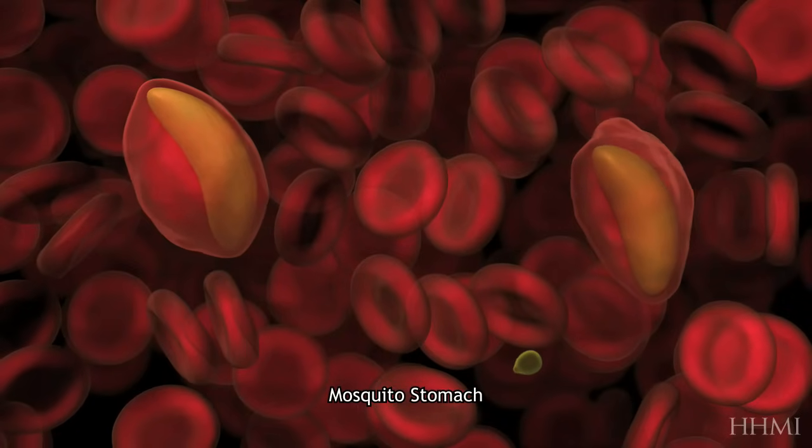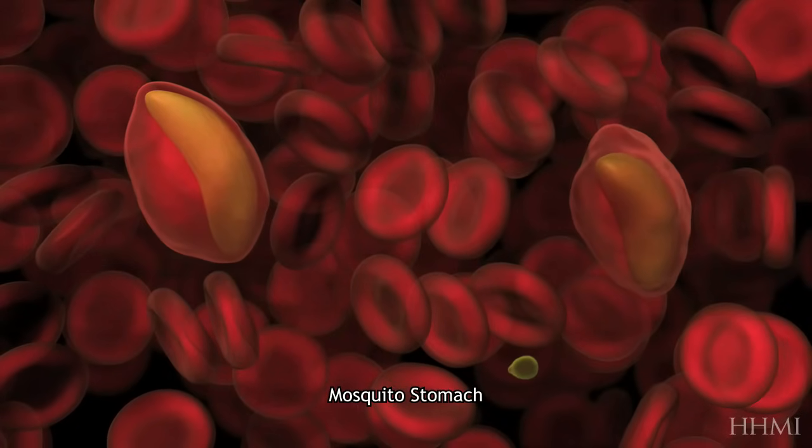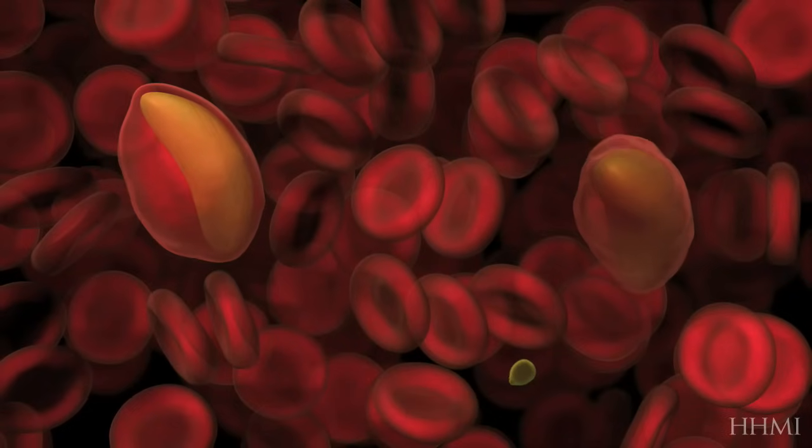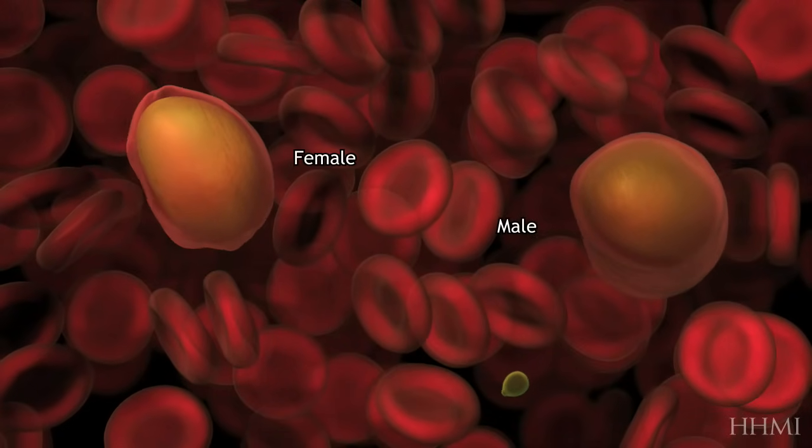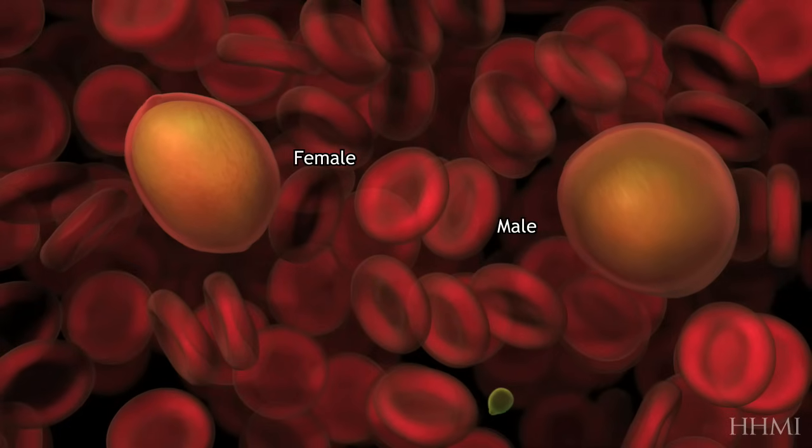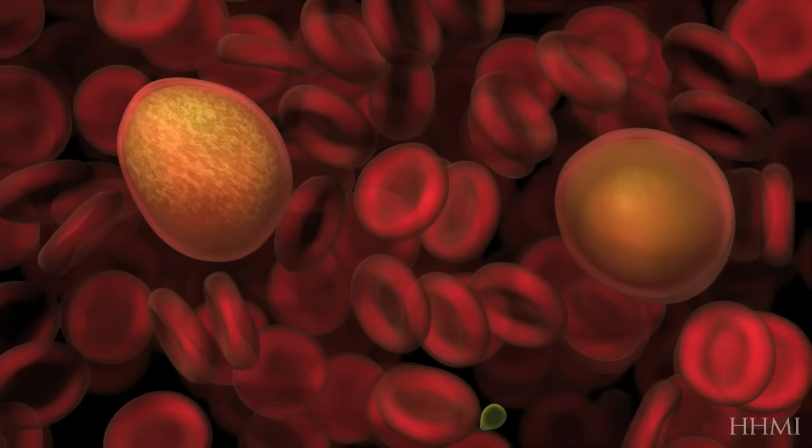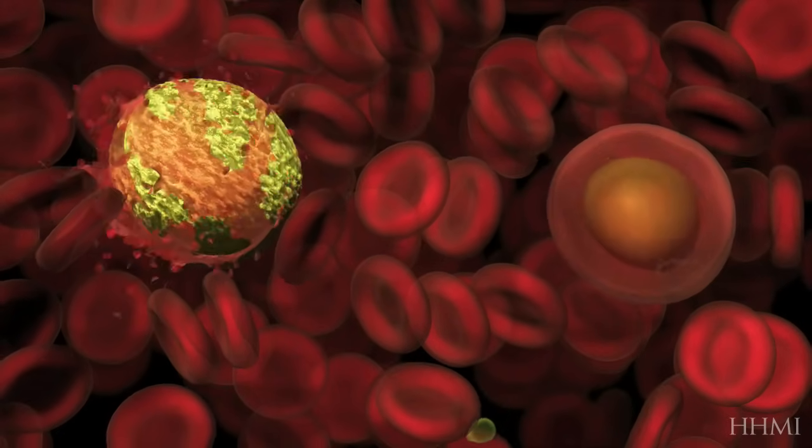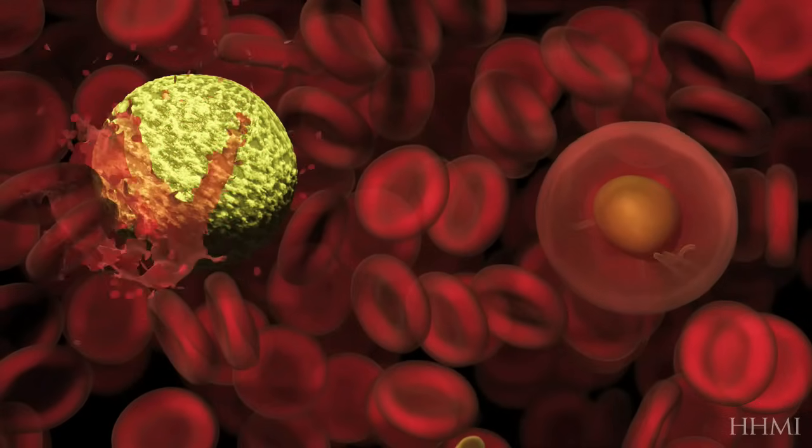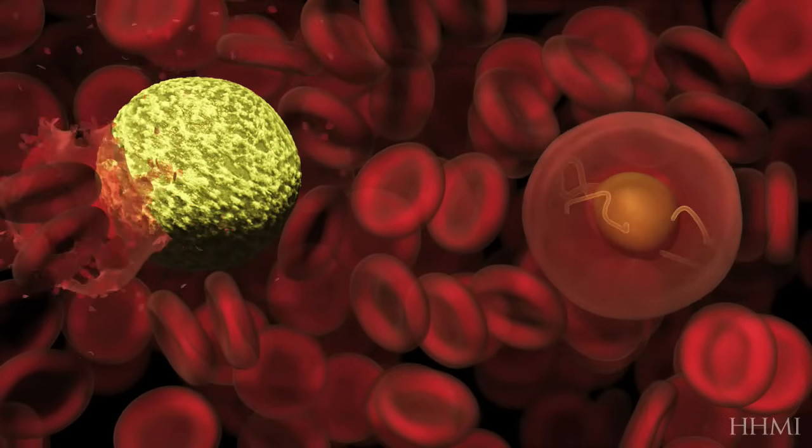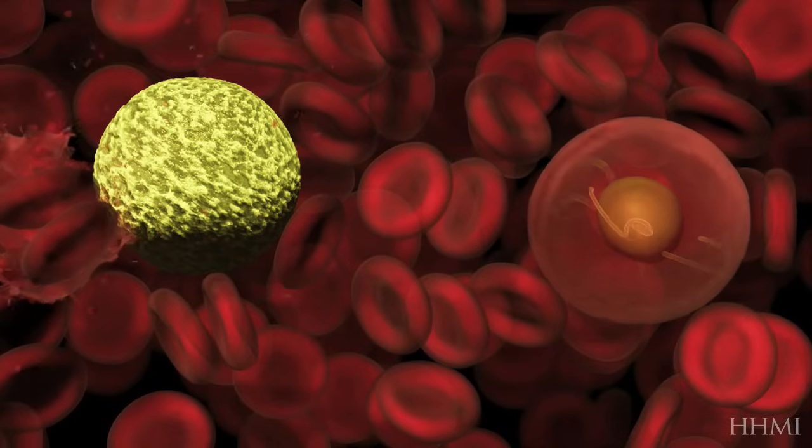Malaria sex is triggered when the warm human blood begins to cool inside the insect's stomach. The female form of the parasite matures into an egg. The male form takes a while longer to mature into sperm.